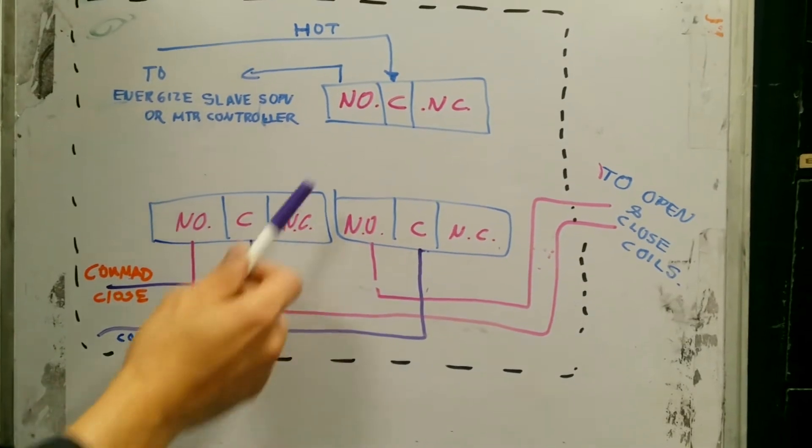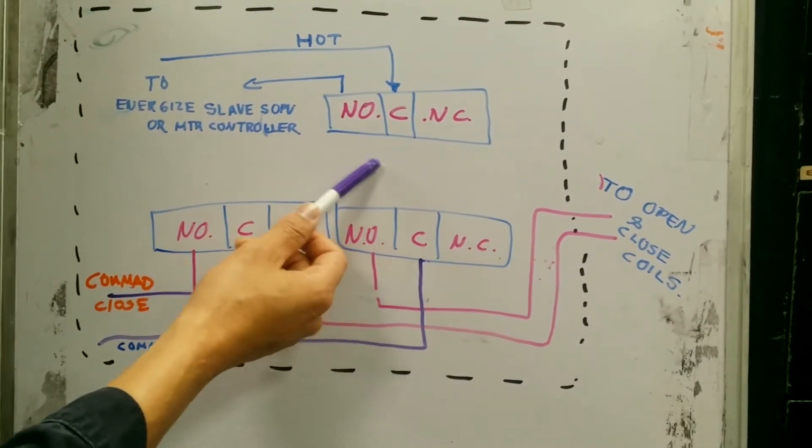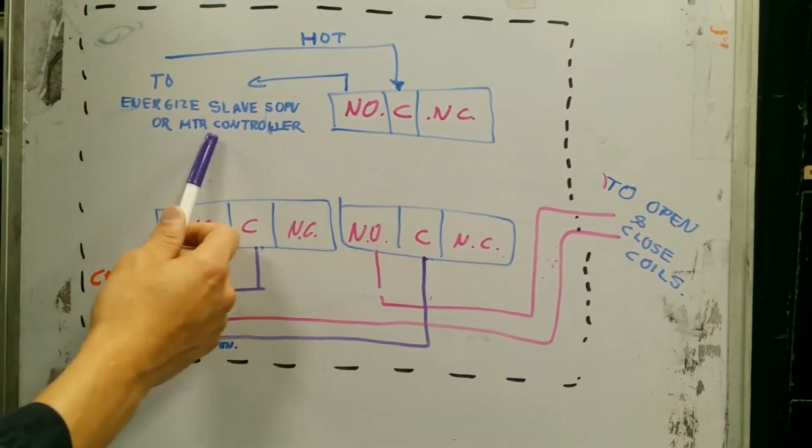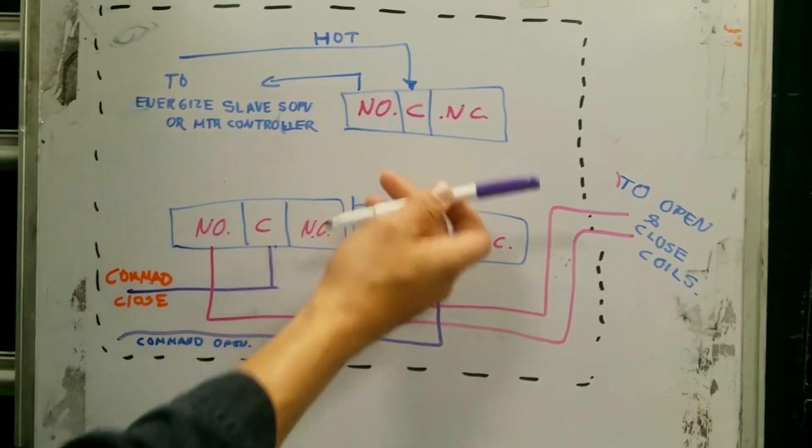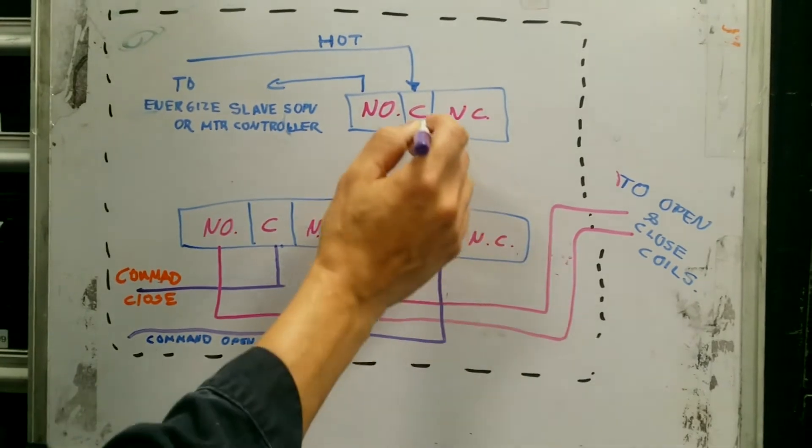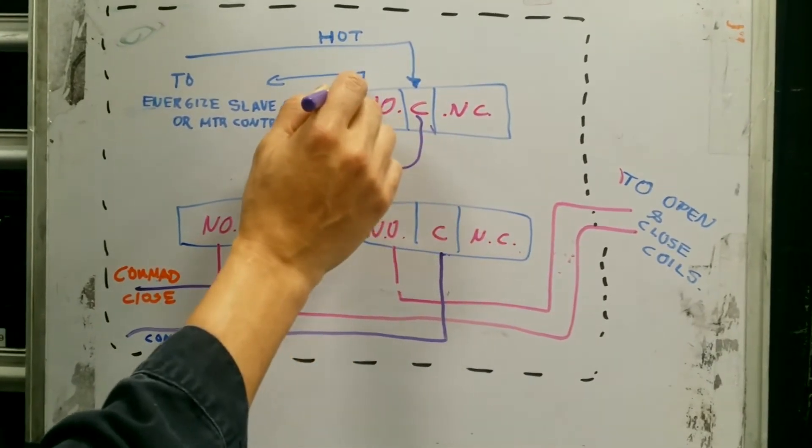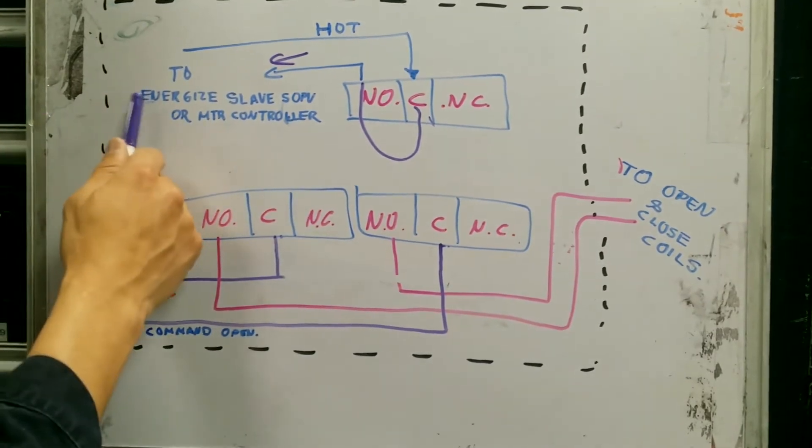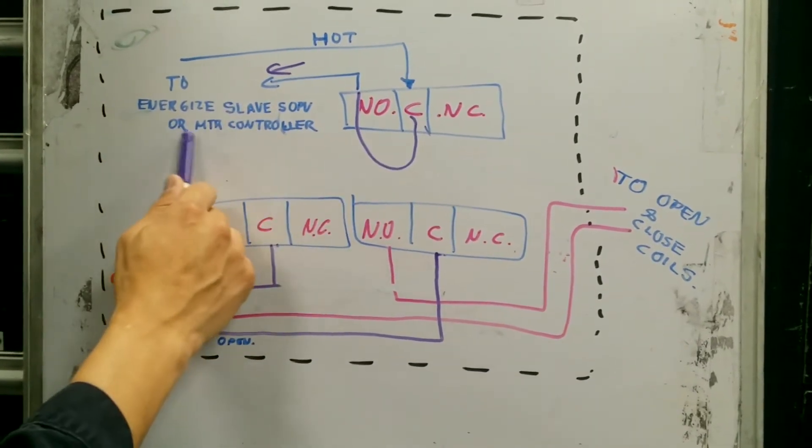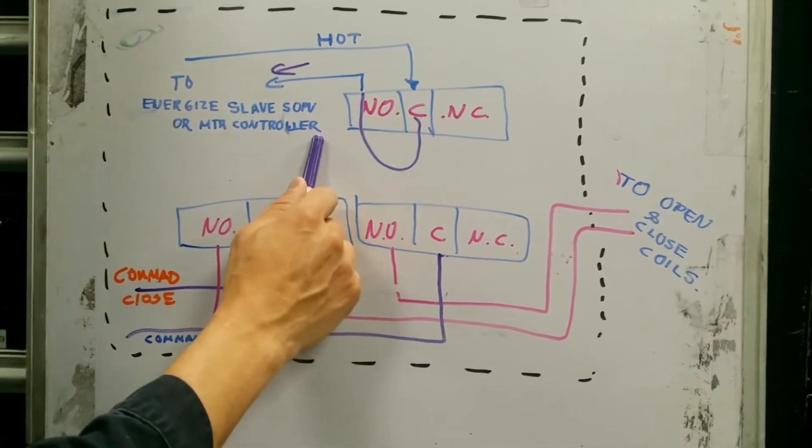A moment ago, I said that an SOPV valve will energize another valve or a controller, and pretty much how it works is there will be a hot line coming in, and then when the valve opens, it will close a set of switches to put power or command to either energize an SOPV valve or for the motor controller to start the motor.